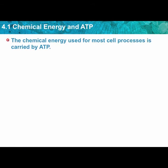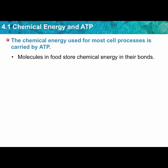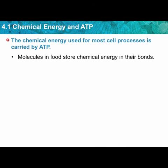The chemical energy used for most cell processes is carried by ATP — adenosine triphosphate. Molecules in food store chemical energy in their bonds, usually as sugar bonds. Glucose and starch molecules are represented here — starch is a long chain of many sugar molecules, each of the green things representing a sugar molecule.